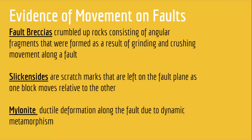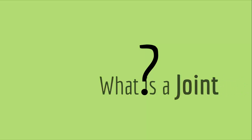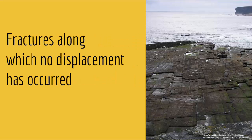But what if no movement occurs? That is called a joint. A joint is a fracture along which no displacement has occurred. In joints, there is no movement. As you can see in this picture, there are fractures in the rock but no apparent displacement. So joints have no displacement, while faults have displacement in the fractured rock.